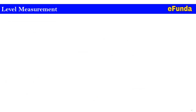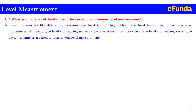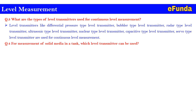Question 3: What are the types of level transmitters used for continuous level measurement? The level transmitters generally used are: differential pressure type, bubbler type, radar type, ultrasonic type, nuclear type, capacitance type, and servo type level transmitters — all used mainly for continuous level measurement.